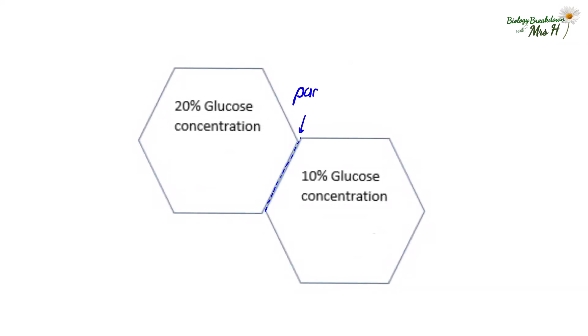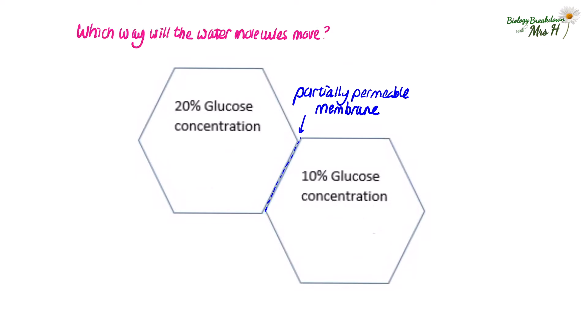Here are two cells with their partially permeable membranes. Which way will the water molecules move? You were given the glucose concentrations. To make it easier: if 20% of that solution is glucose, then 80% is water. In a 10% glucose concentration, there will be 90% water concentration. Now you can use the definition — water molecules move from a higher water concentration to a low water concentration through a partially permeable membrane. So osmosis will occur in this direction.